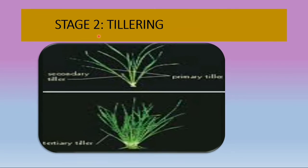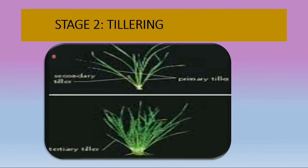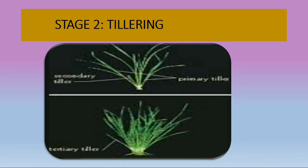Coming to stage 2, the tillering stage: tillers displace a leaf as they grow and develop, extending from the first tiller to maximum tillers. At the maximum tiller stage, some tillers die or level off.